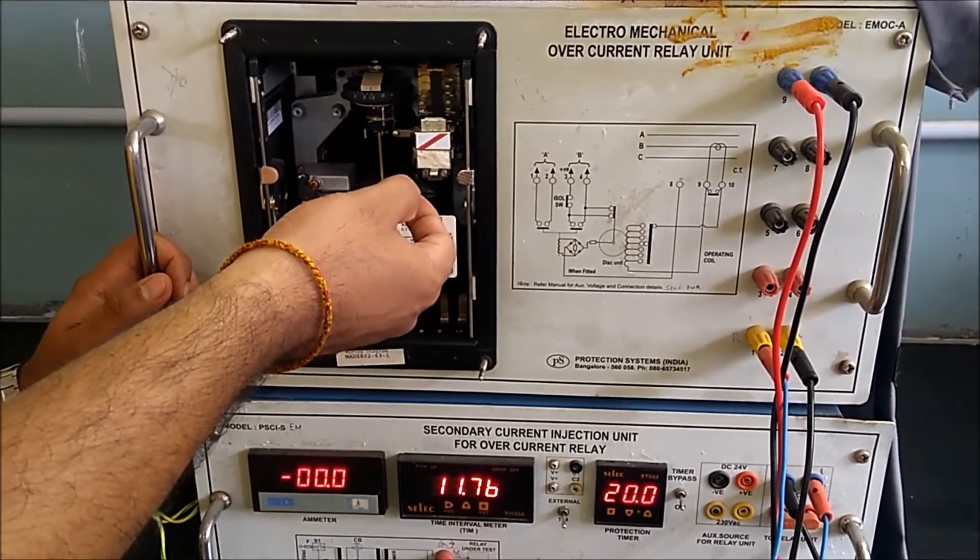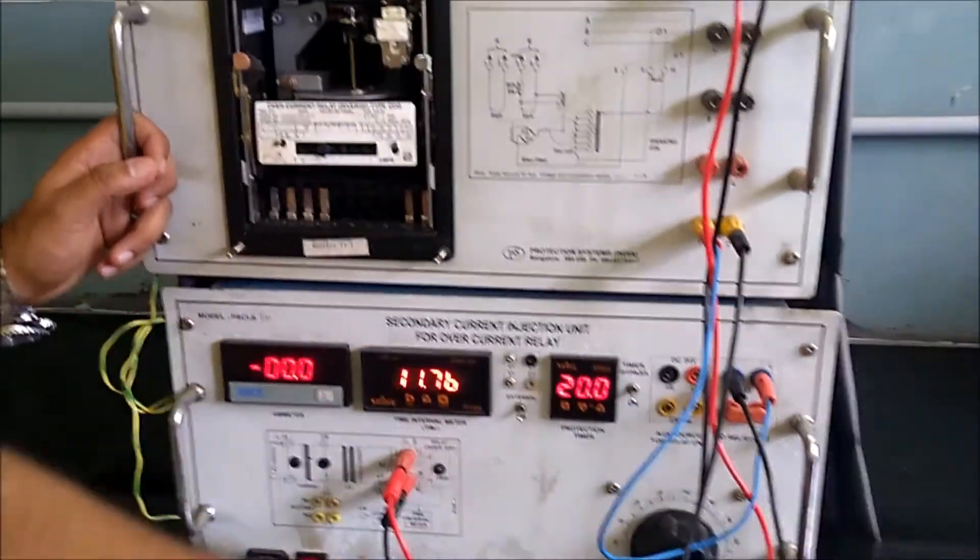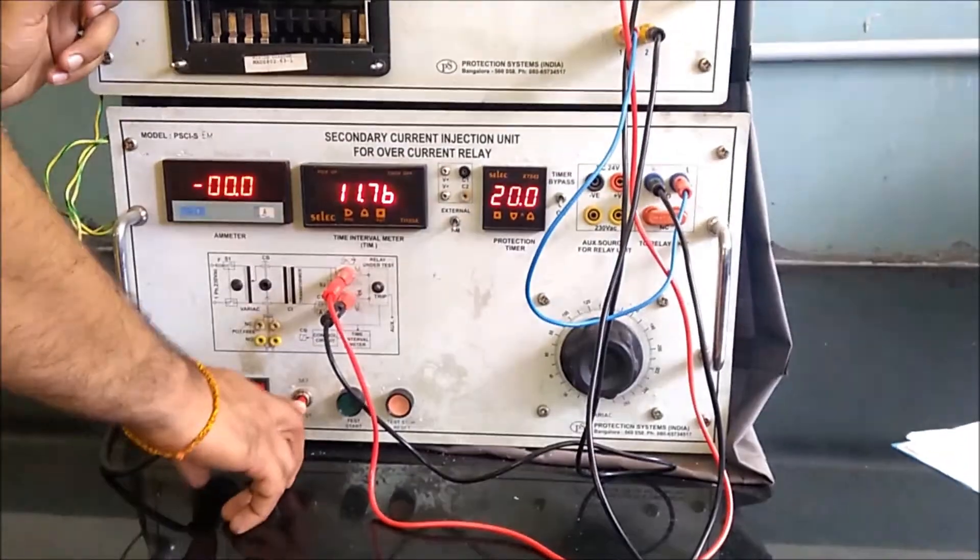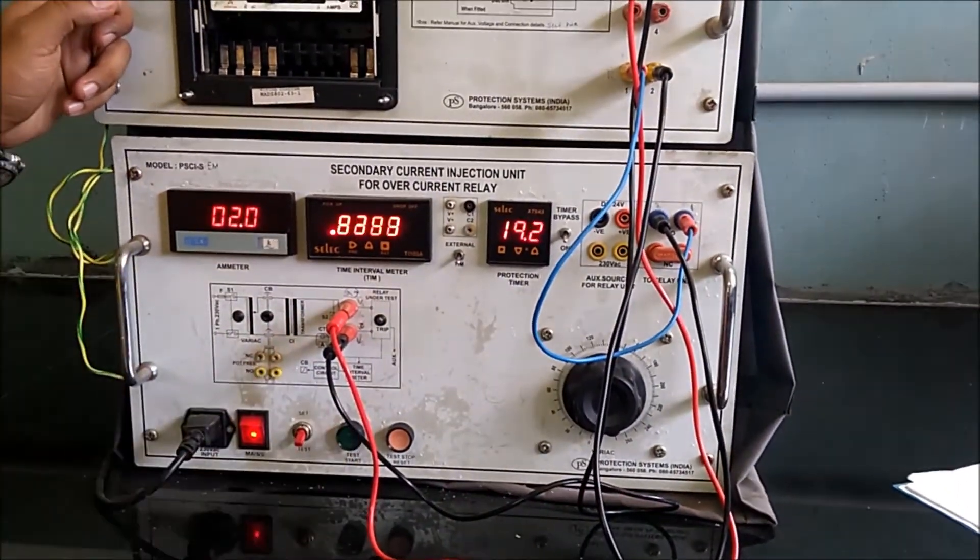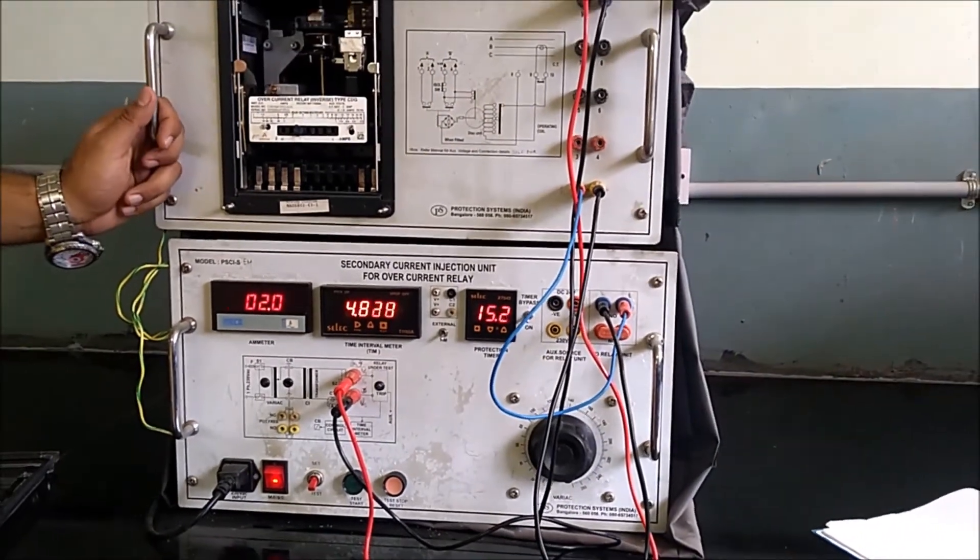Now this fault is more severe than the previous, so it should trip faster than the previous value. Previous value was around 18 seconds. Now for the fault rate of 1.5 amps, now the fault current is 2 amps.